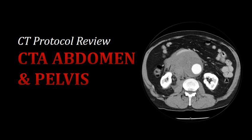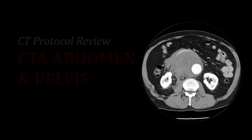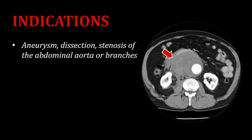This CT protocol review is on CTA of the abdomen and pelvis. There are a few reasons that we would perform a CTA angiography scan of the abdomen and pelvis. We're really looking for an aneurysm, dissection, stenosis, or some kind of anomaly in the abdominal aorta or its branches.